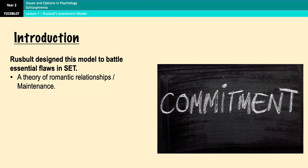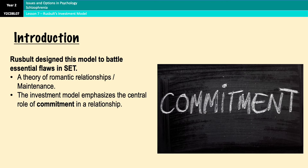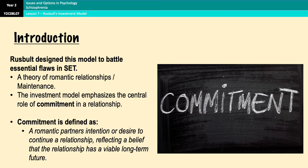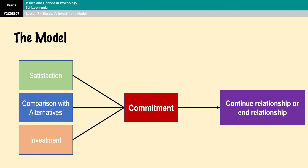The investment model suggests that the success of a romantic relationship rests on the level of commitment that the partners have to the relationship. Commitment is defined as a romantic partner's intention or desire to continue a relationship, reflecting a belief that the relationship has a viable long-term future. The model suggests that commitment depends on three individual factors, which you can see in the diagram here, and two of the three should already look familiar from social exchange theory.